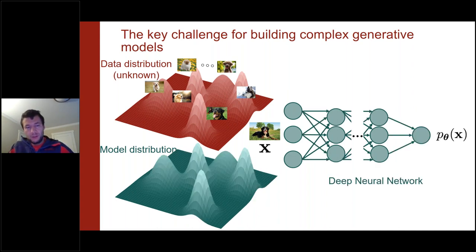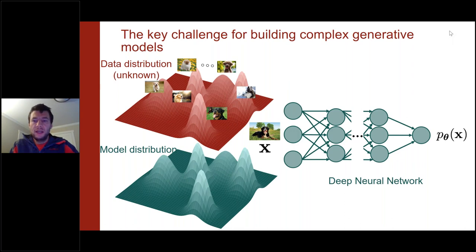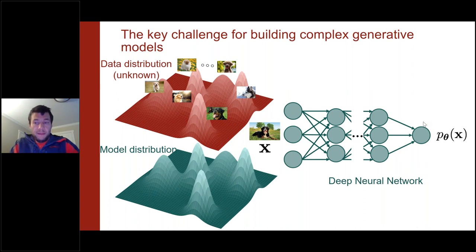To model real-world data distributions, we need something more complex. A lot of the advances in recent years have leveraged deep learning and deep neural networks to model this distribution, which we call p_θ(x), where θ represents all the parameters in the neural network.